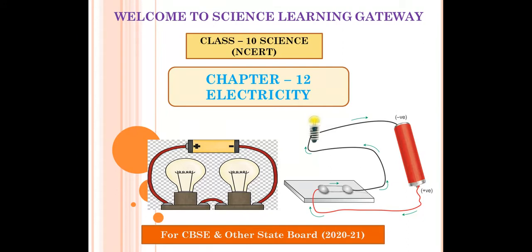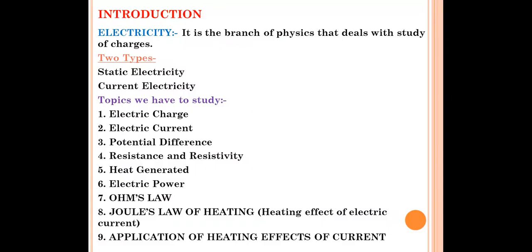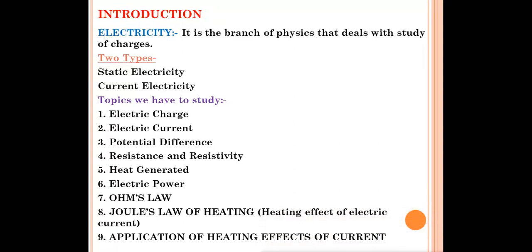We'll start this chapter with each definition, terms, and formulas so that it will be easy for you to score good marks. First of all, you should know what is electricity. It is a branch of physics — in science we have three branches: physics, chemistry, and biology. Electricity is a branch of physics which deals with the study of charges.